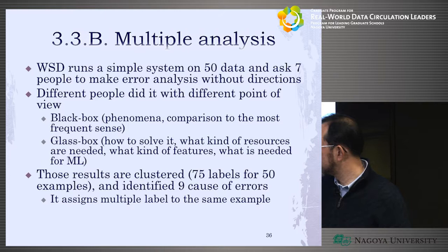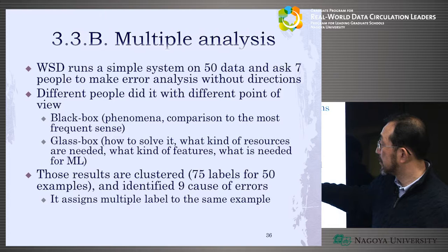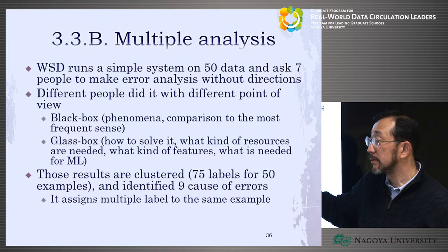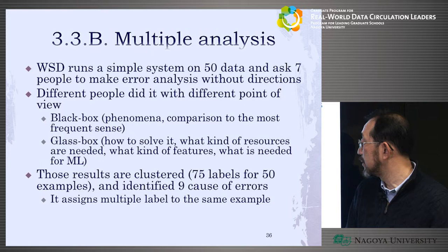What they then did was try automatic clustering of the results. There were 75 labels total — seven people each labeled about 10 types of errors across 50 data items. Using automatic clustering, they identified nine causes of errors.